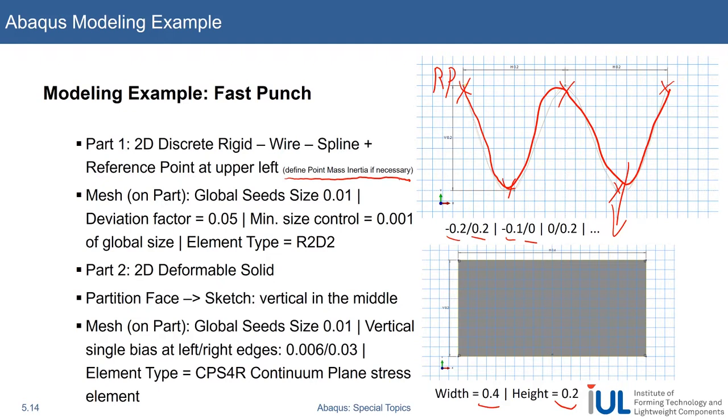Global seeds. So we mesh on part. I hope you remember my favorite element. Then we will create the block as a deformable solid, and then we will actually partition it. We will use the partition option to vertically partition it. I think we didn't talk about partitions so much before.